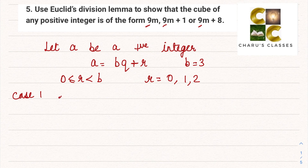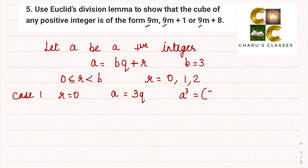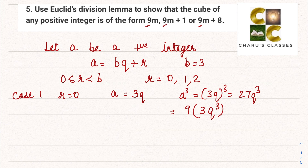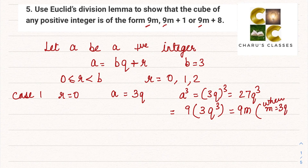Case 1: when r = 0. Then a = 3q, so a³ = (3q)³ = 27q³. Since this is a multiple of 9, we write it as 9(3q³), which is of the form 9m, where m = 3q³.